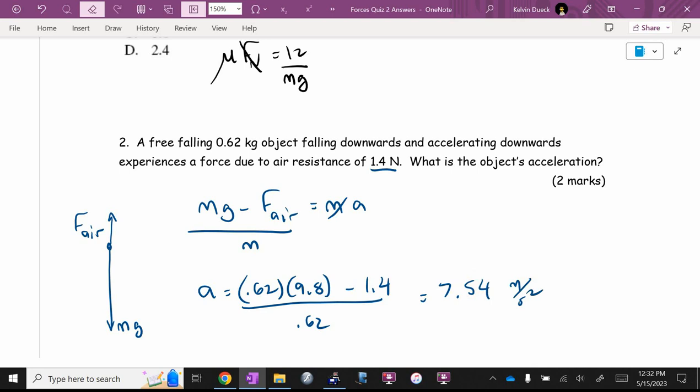If you got that two out of two, otherwise, I would give you a half mark if I saw that. I would give you a half mark for dividing by M, saying I know how to get the A by itself. I would give you a half mark for the numbers and a half mark for the answer.